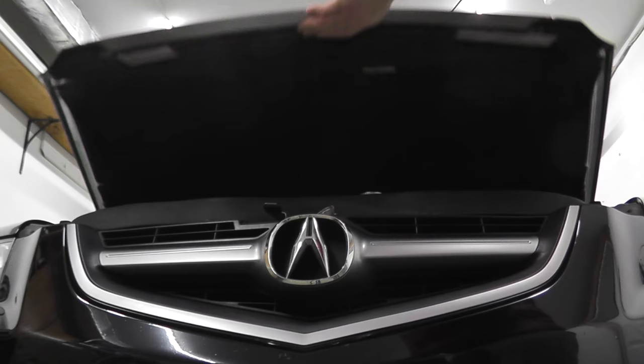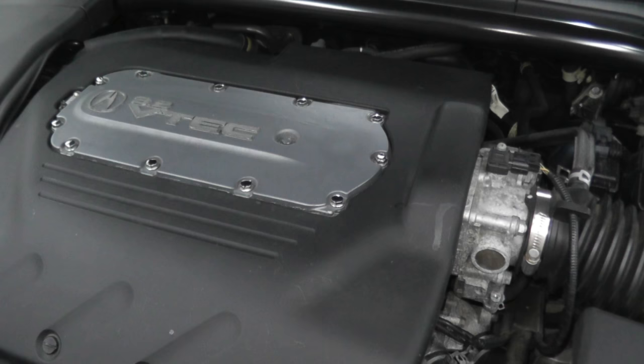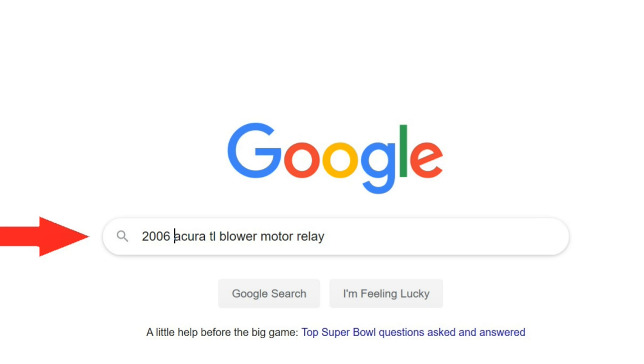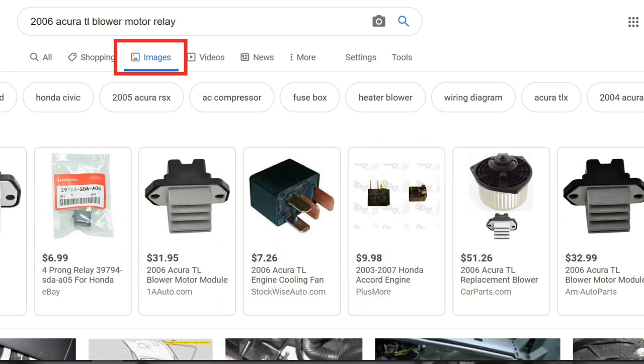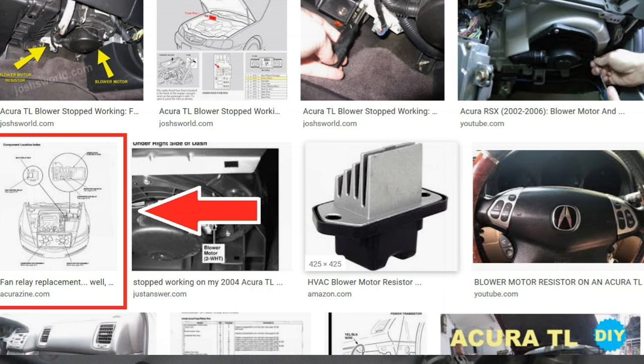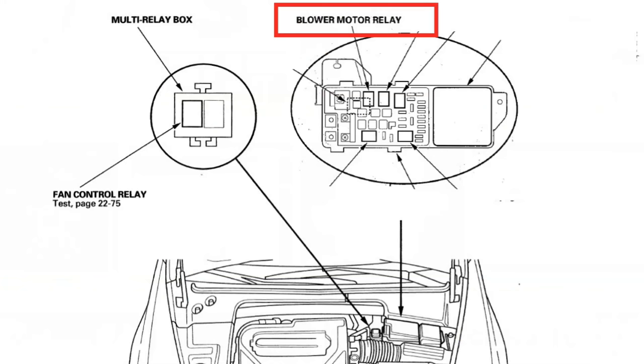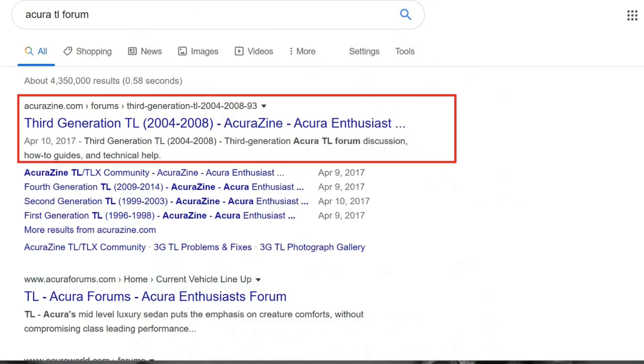How do you find the relay specifically on your vehicle? Really two things. Number one is do a web search. In my case, 2006 Acura TL blower motor fan relay, and quickly I'll have diagrams and pictures showing where the relay lives. If that doesn't work, visit a forum specific for your vehicle. Many times you have members that will know your vehicle inside and out.